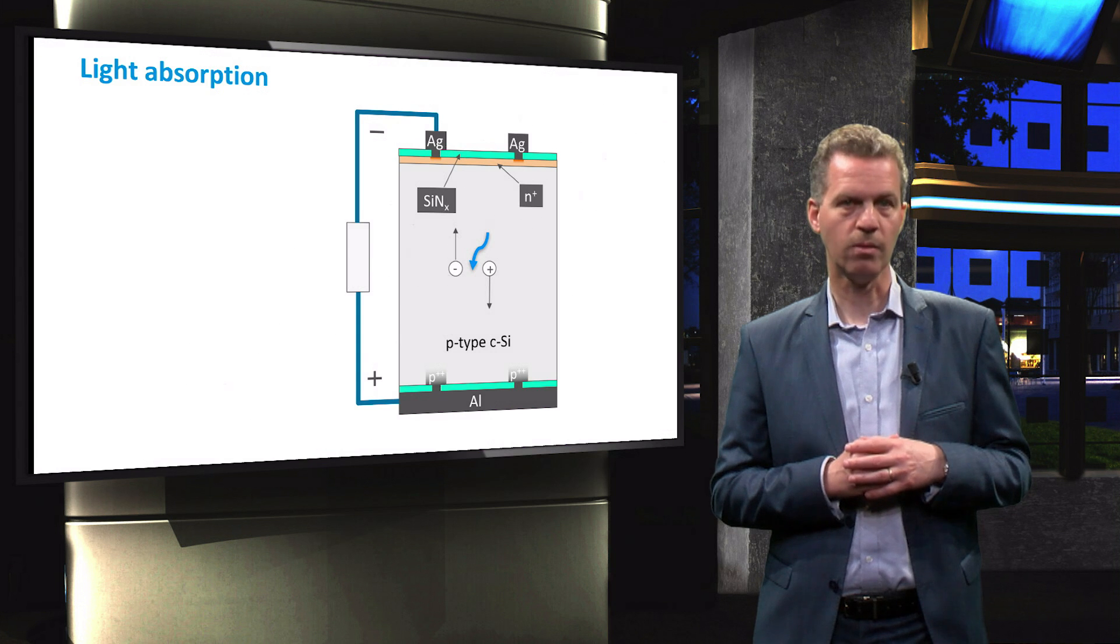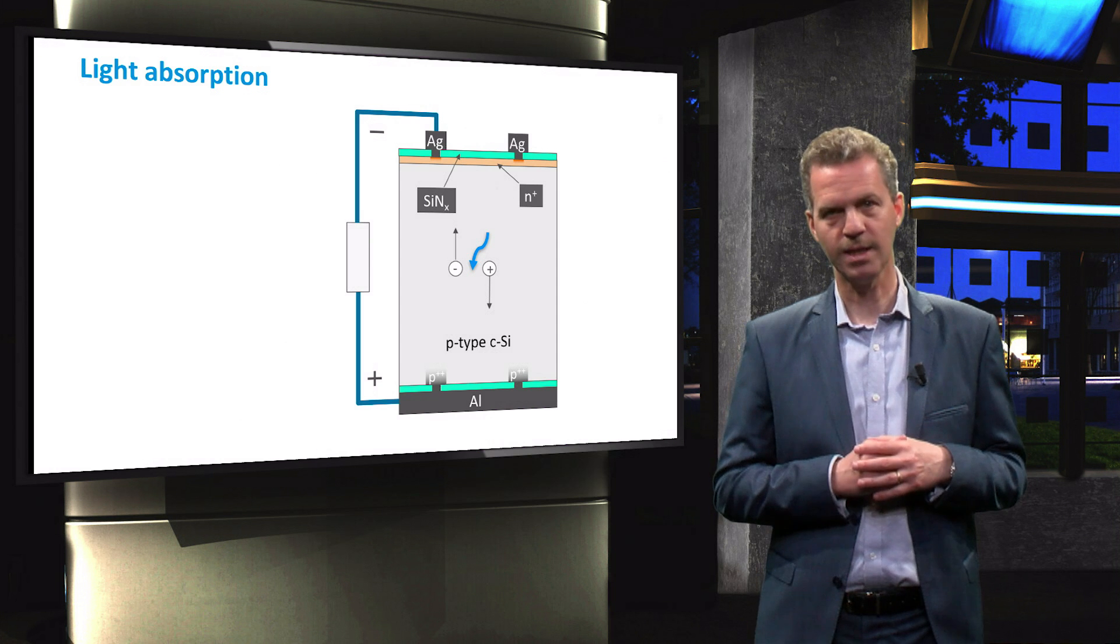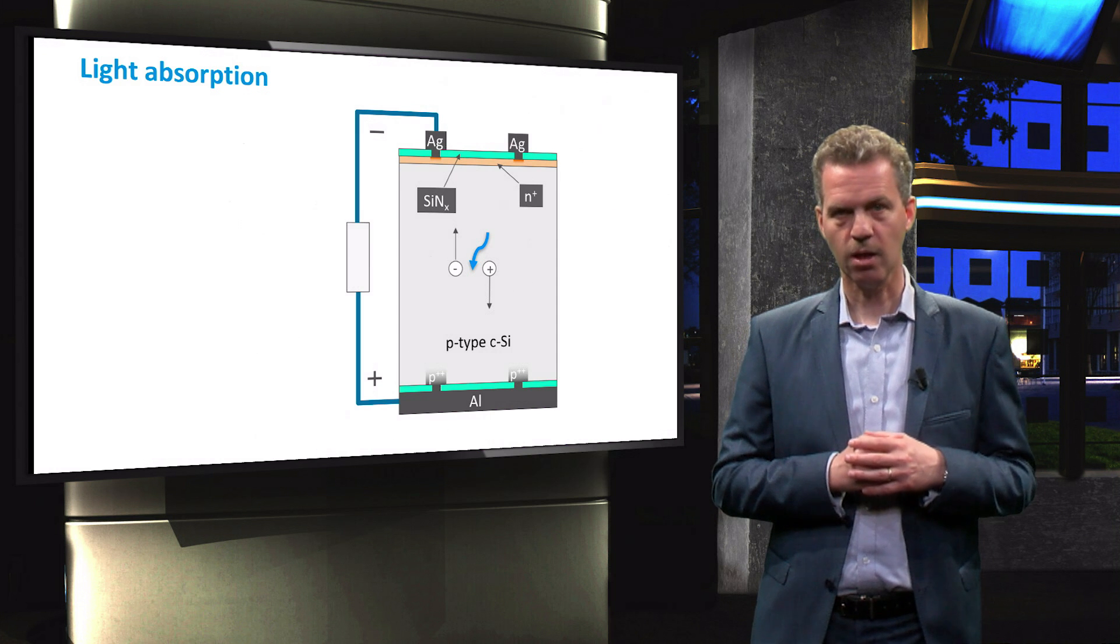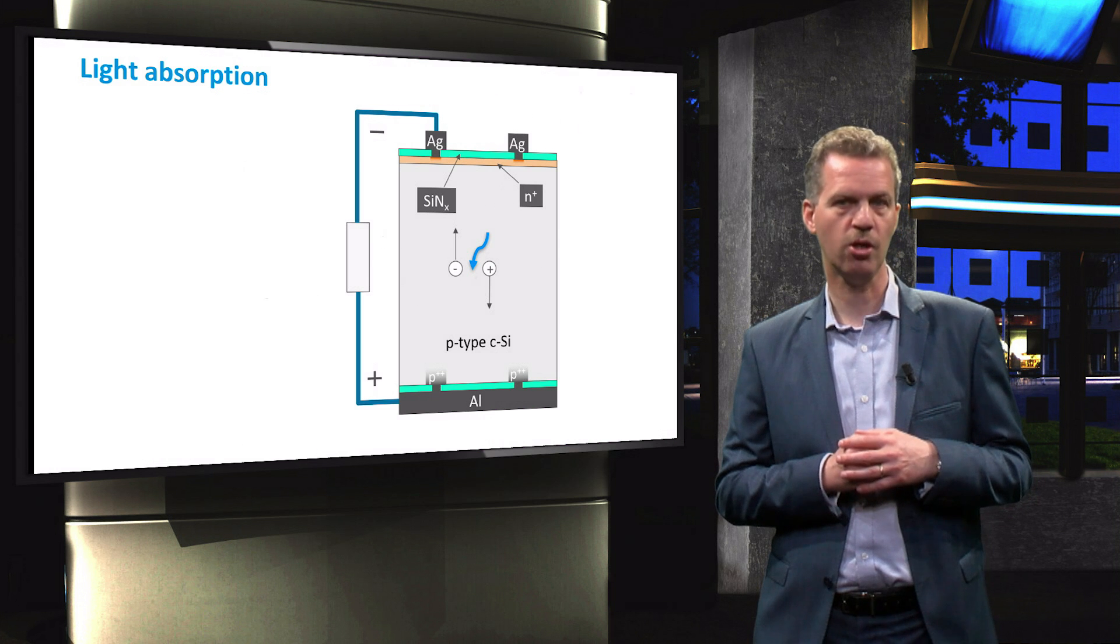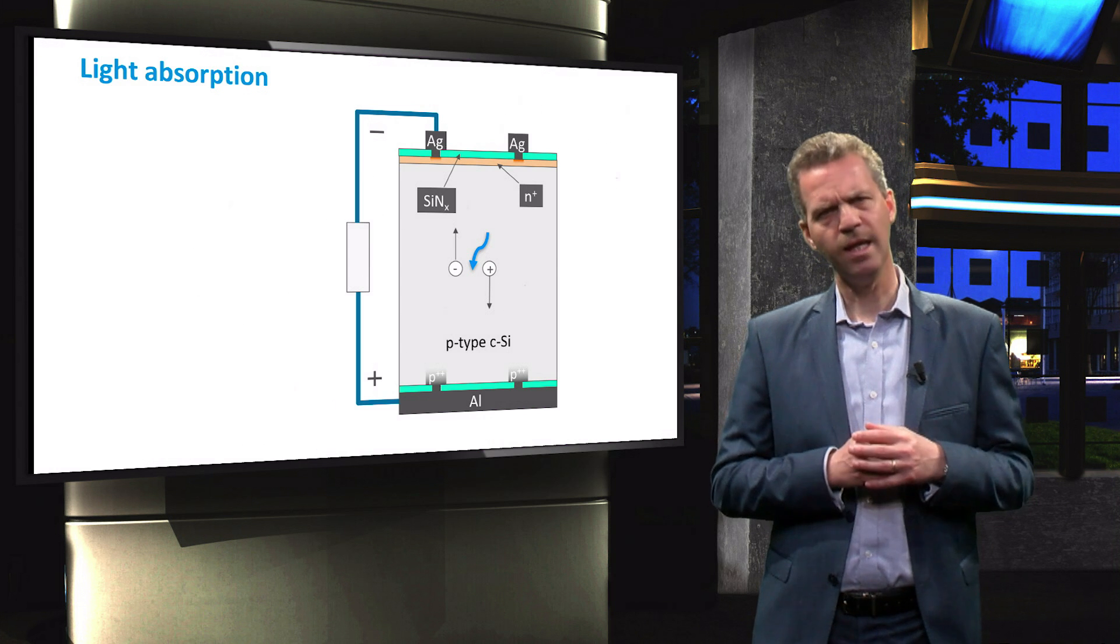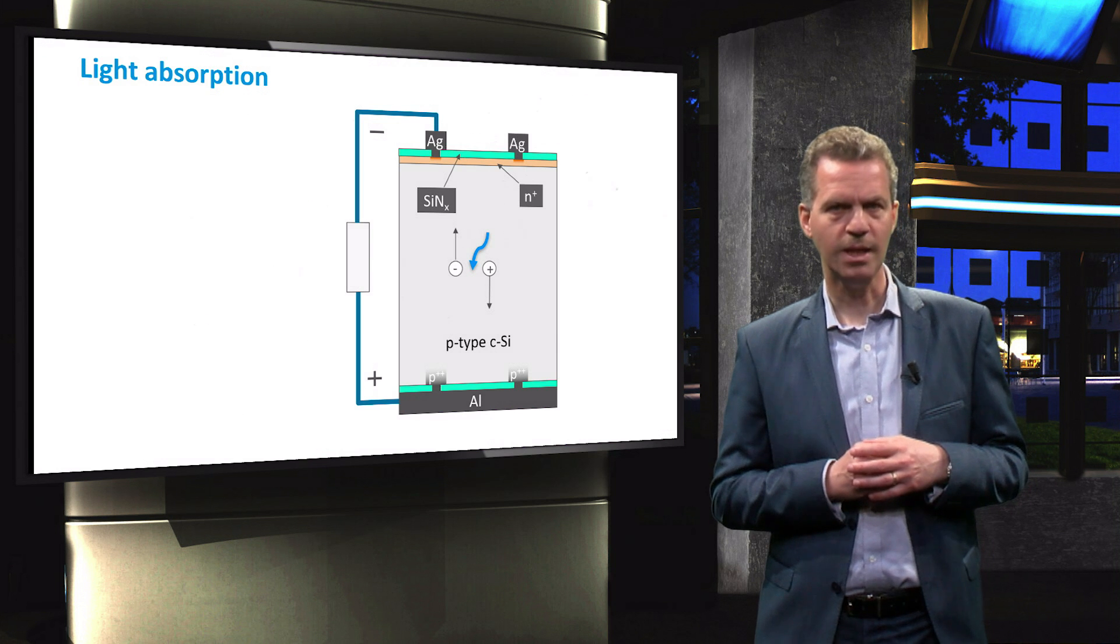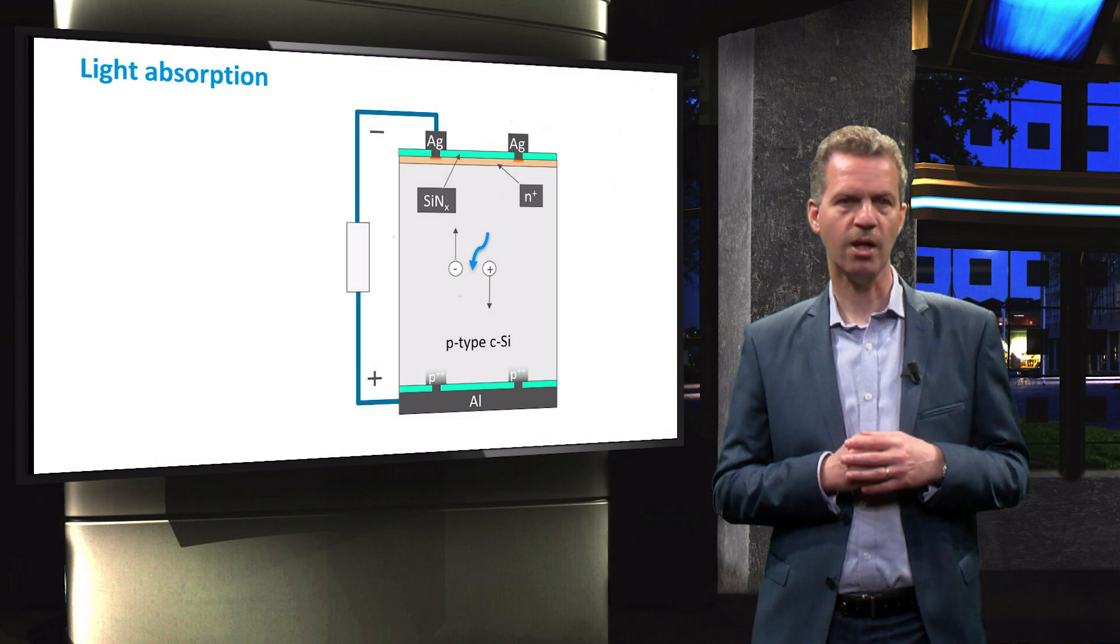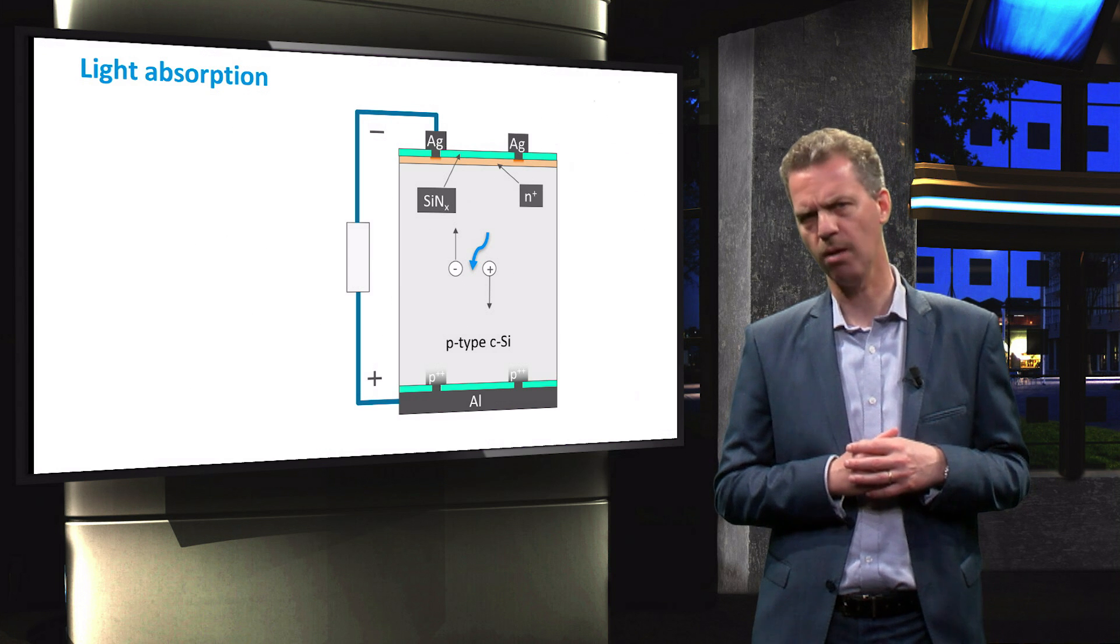Since every photon can generate one electron hole pair only, the photogenerated current density delivered by a cell is directly proportional to the absorption of light. Notice that the photogenerated current density is not necessarily equal to the current in the external circuit as carriers may recombine before collection by the metal contacts. Yet it is clear that we will try to maximize the photogenerated current density by increasing as much as possible the absorption of light. Therefore, we will discuss the optical loss mechanisms in the cell and how we can improve the cell design to reduce these absorption losses.